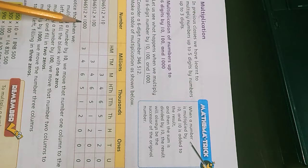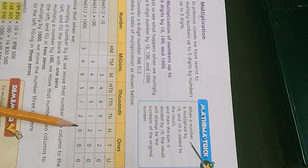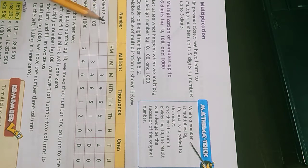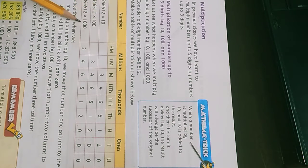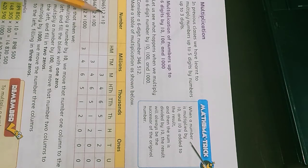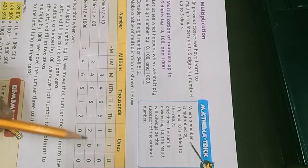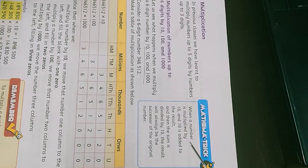When we multiply with 1000, we will add three zeros at the end. So whatever value you have: if you multiply with 10, add one zero; if you multiply with 100, add two zeros; if you multiply with 1000, add three zeros at the end of the value.